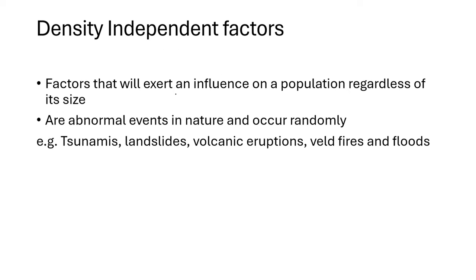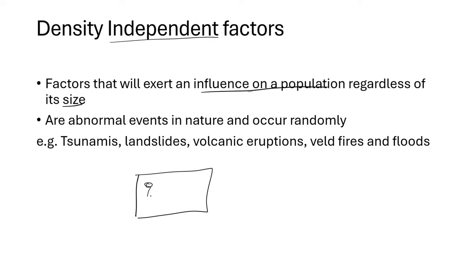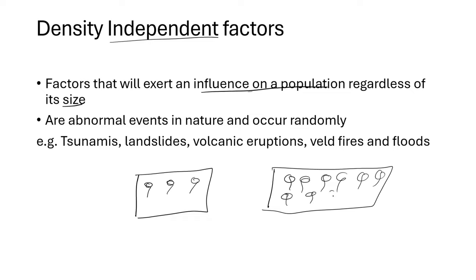The third type is density independent factors. These factors exert an influence on a population regardless of its size. Density independent factors do not depend on the population size — they can affect both small and large populations. In nature, certain events occur randomly and do not depend on whether the population is dense or not. Examples include tsunamis, landslides, volcanic eruptions, veld fires, and floods.